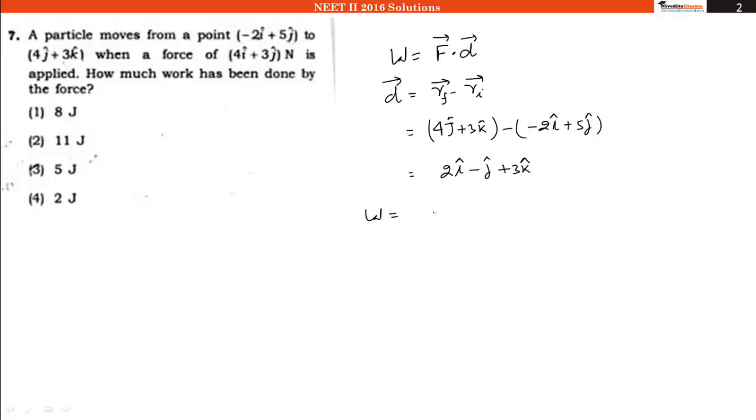So work done will be equal to 4i plus 3j dot 2i minus j. In dot product, i will be multiplied by i, it will be 8, then minus 3, then there is no k, so plus 0.